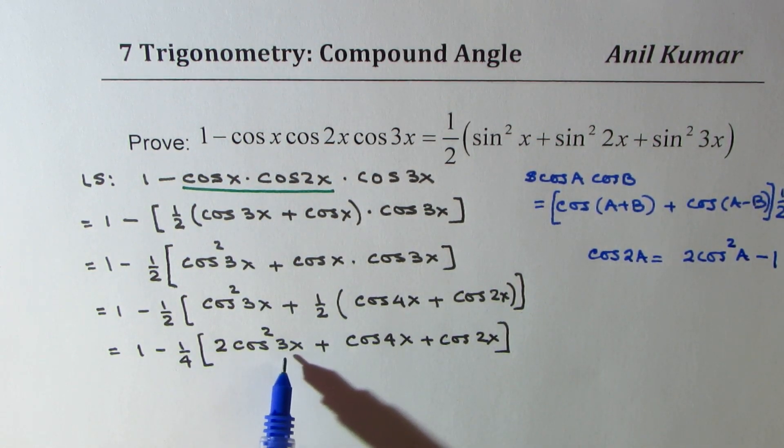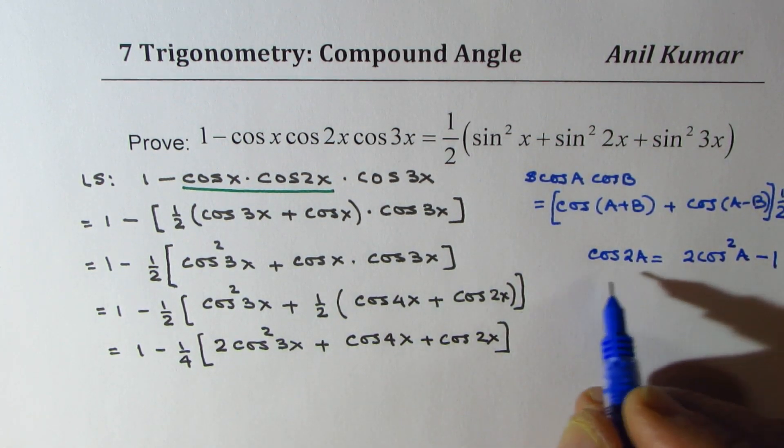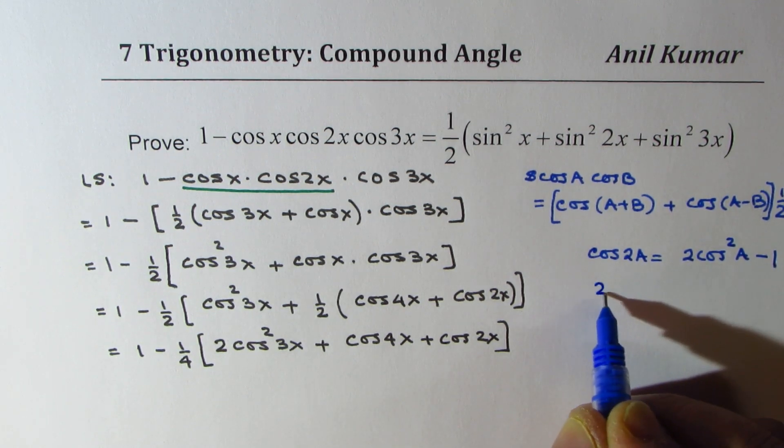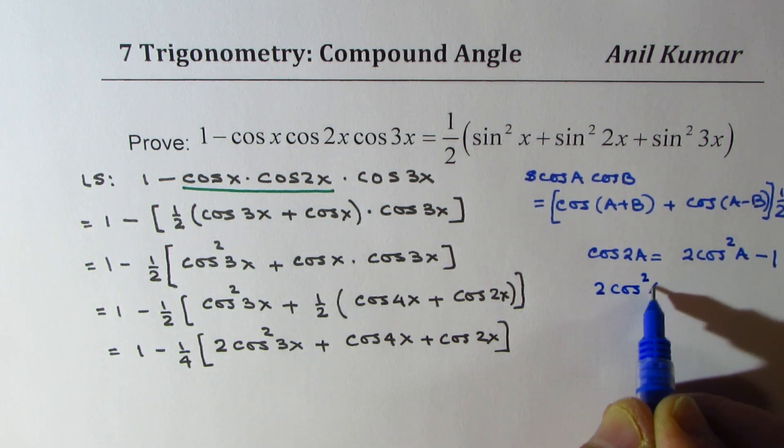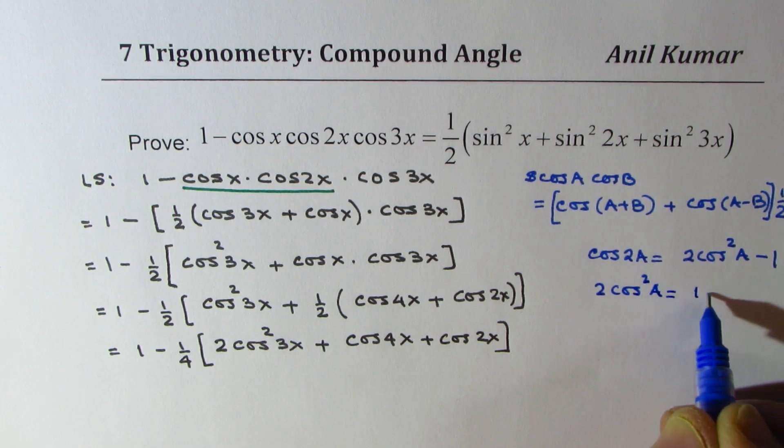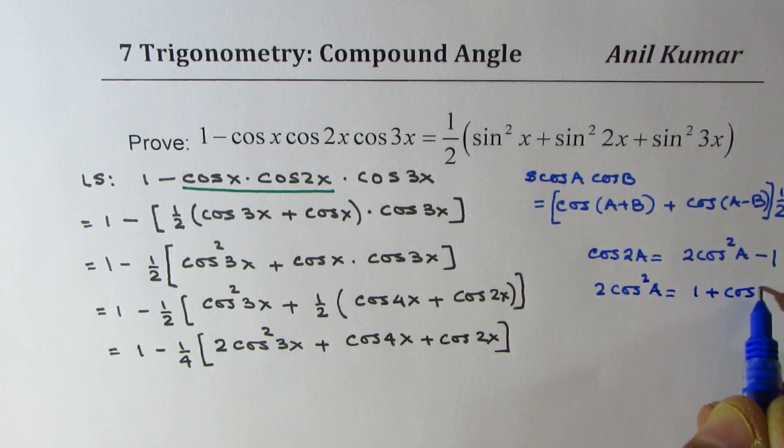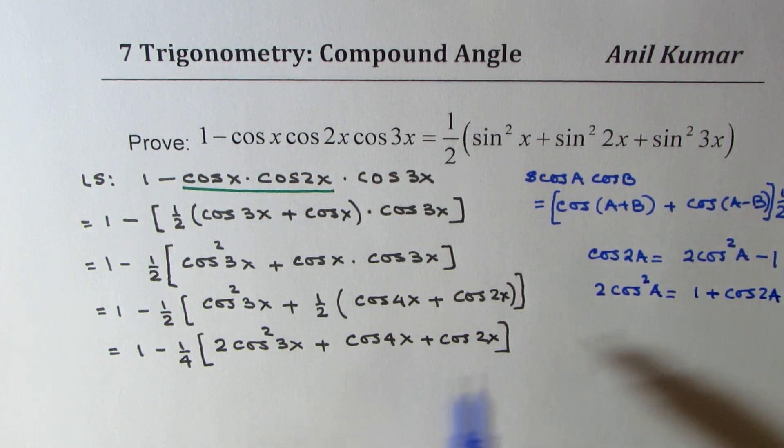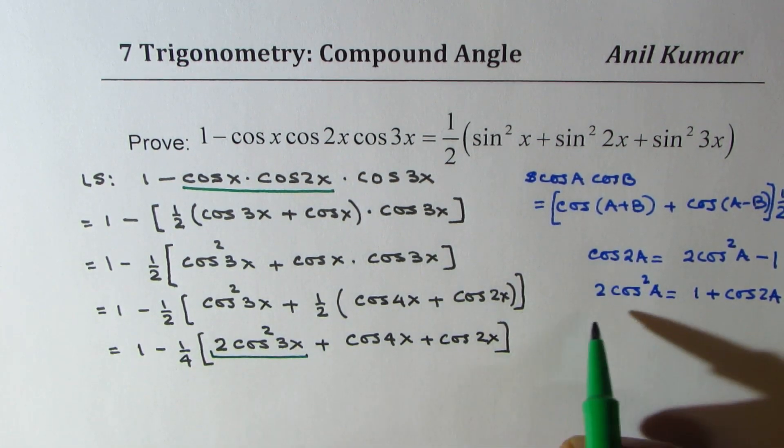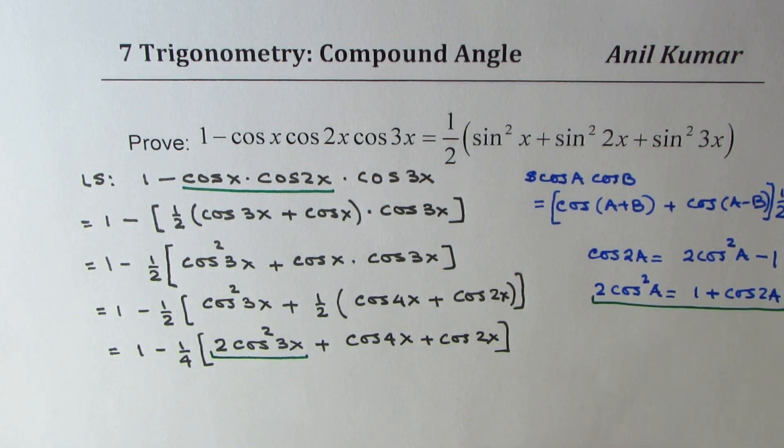So, we have the term 2 cos square a. So, we could write this as 2 cos square a is equal to 1 plus cos 2a. So, we'll replace it with 1 plus cos 2a.